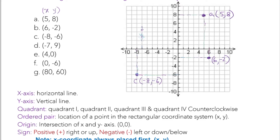Point D is at (-7, 9). Then we have point E at (4, 0) — this one is a little different; there's no y movement up or down. X is 4, so we go 4 to the right, but y is zero so it is not going up or down. It is sitting right on the x-axis at the origin level. So point E at (4, 0) is on the x-axis.